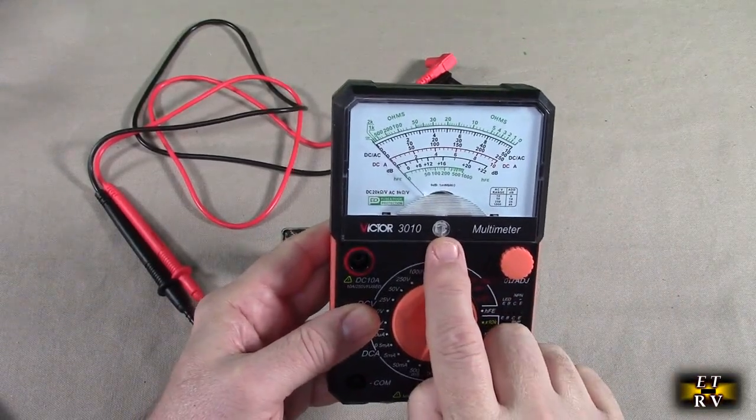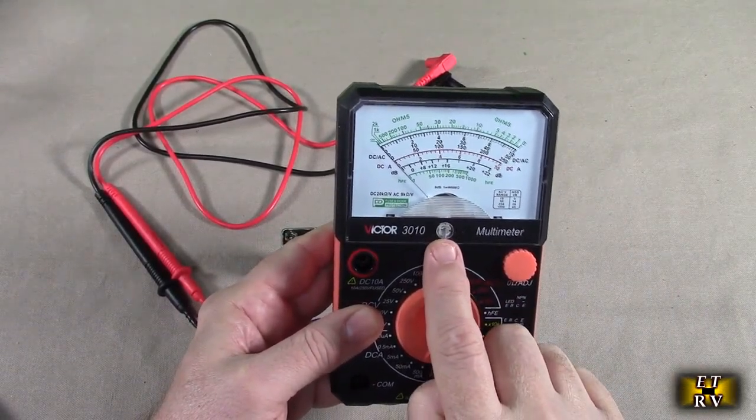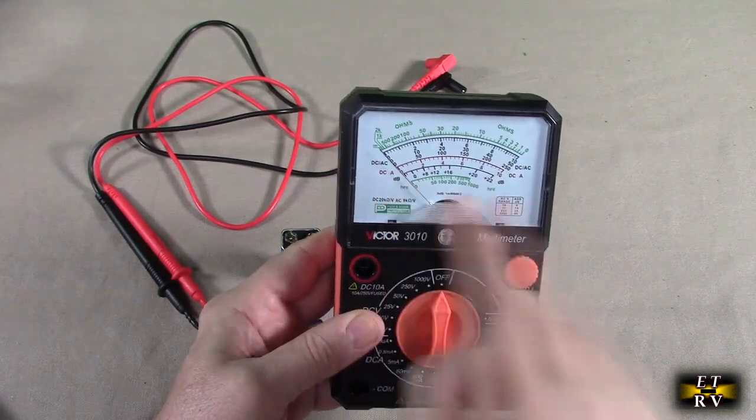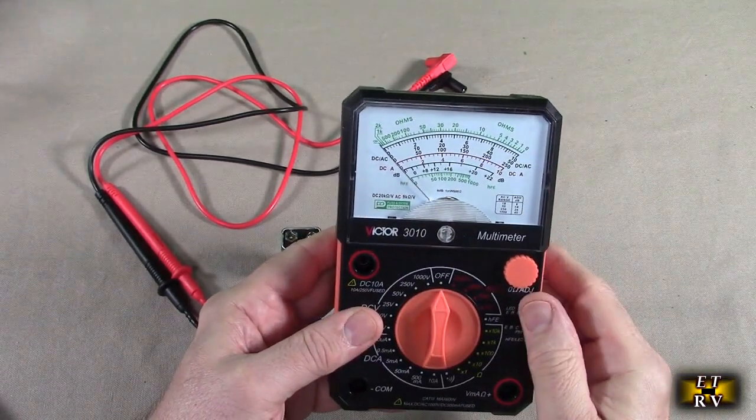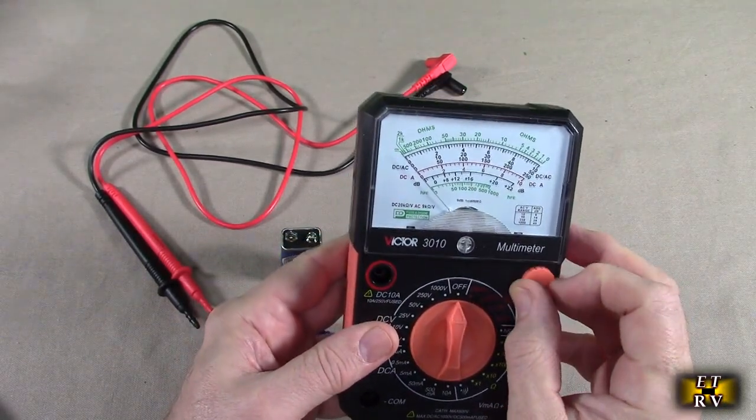It even has a mechanical rotation piece right there if you want to mechanically line it up but it comes already lined up. You've got your ohm meter adjustment right there.